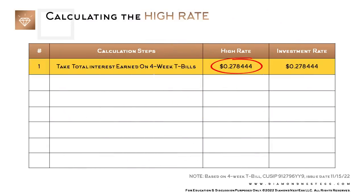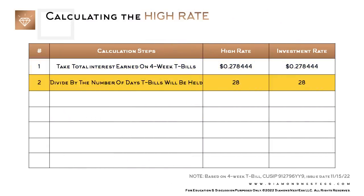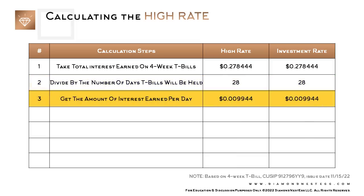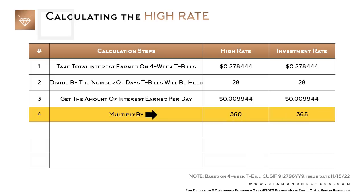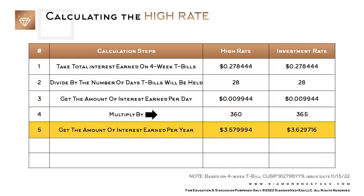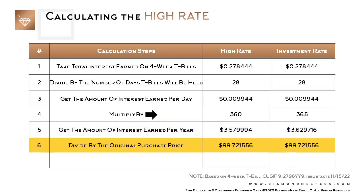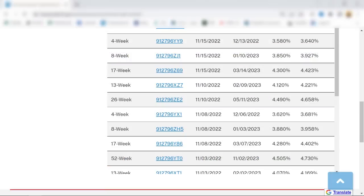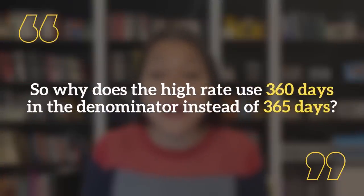When you calculate the high rate on the Treasury Auction Results page — which in the case of our four-week T-bill example is 3.580% — the first three steps are exactly identical to the investment rate calculation. Take the total interest earned, divided by the number of days held (28 days), to get the interest earned per day. Step four is where things change: instead of multiplying by 365, you multiply by 360 days. As before, divide by the original purchase price, and there's the high rate — same as shown on the Treasury Direct site.